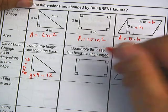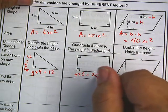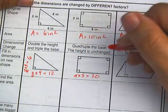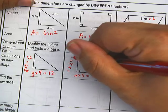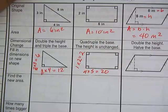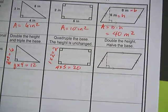Here I'm going to quadruple, that means times 4, the base. 4 times 5 is 20. And height is unchanged. That's a one factor. Because multiplying by 1 is the identity property, it means that it stays the same.